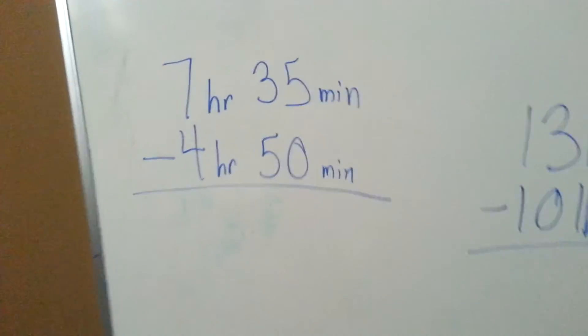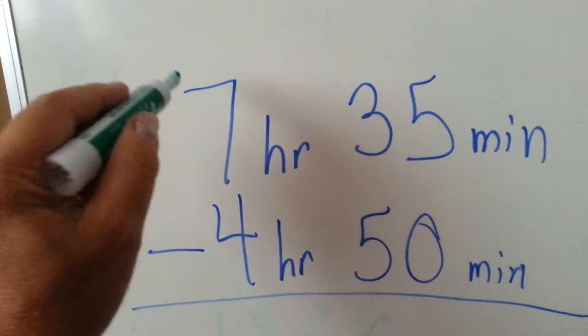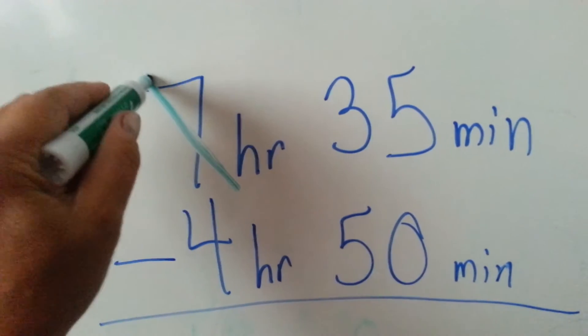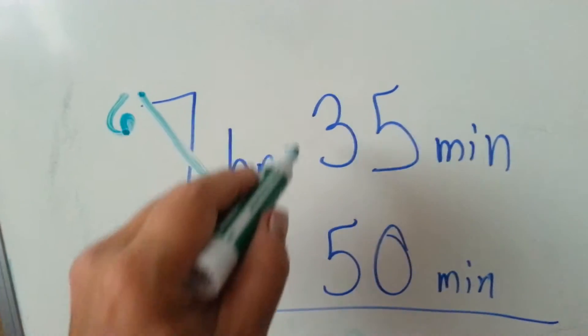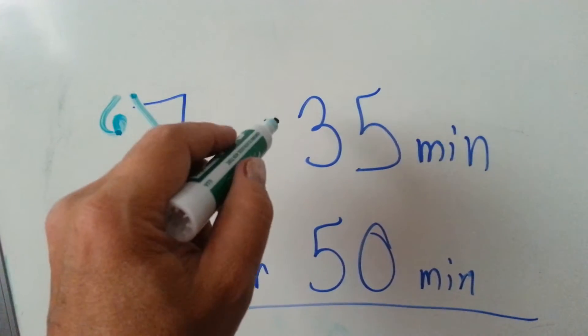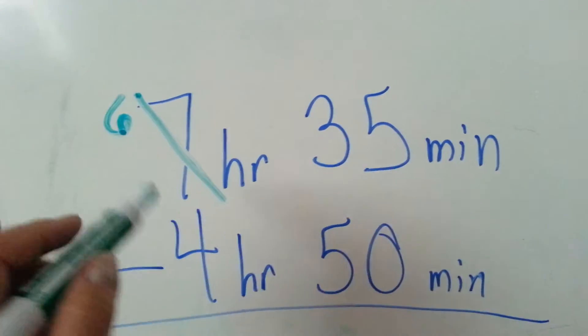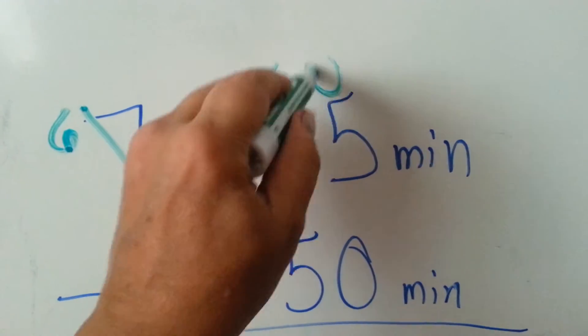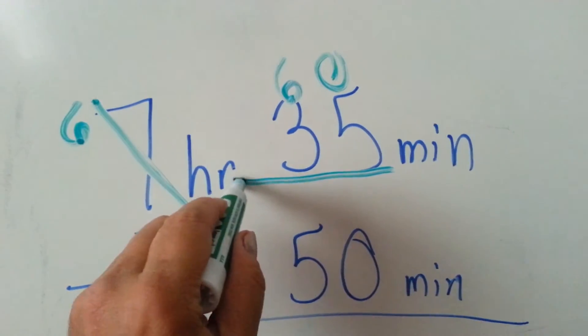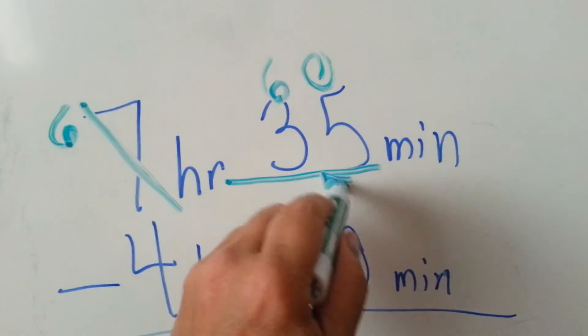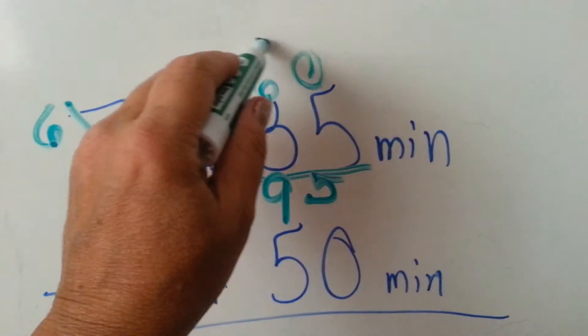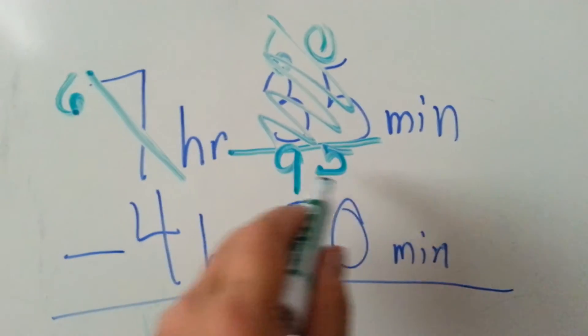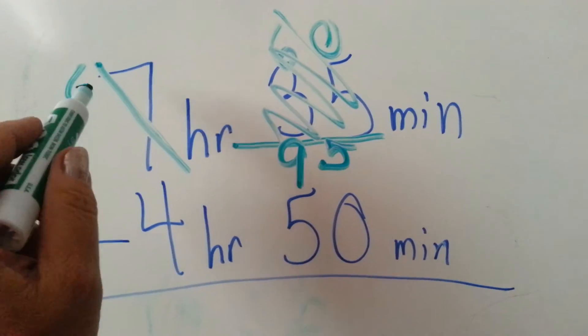If I'm going to borrow from the hours, this seven is going to become a six. Instead of borrowing like normal in subtraction and putting a one here, I'm giving it 60 minutes. So we're going to add 60 minutes to this. 0 and 5 is 5, 6 and 3 is 9, and now we've got 95 minutes and 6 hours.